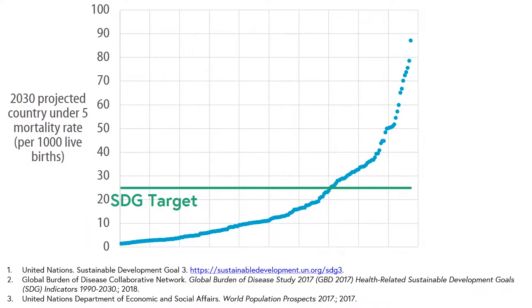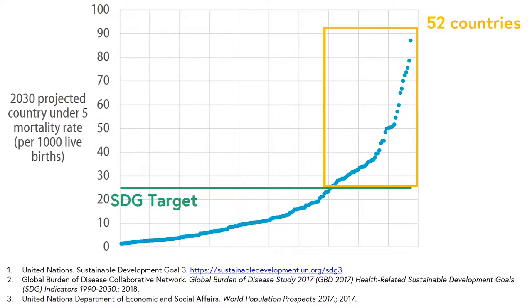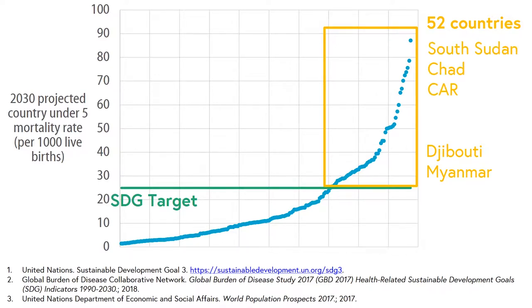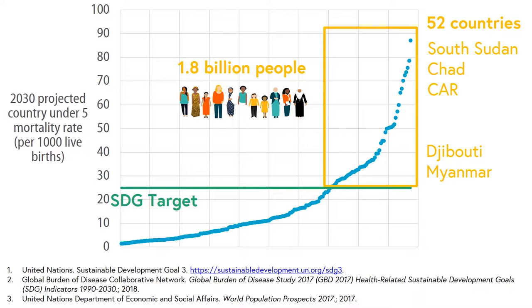Looking to the future, this graph shows the projected under-5 mortality rate for 2030, with each blue dot representing a different country. There are many countries with projected under-5 mortality rates over 25. With current progress, some will come close — for example, Djibouti and Myanmar will get to within one or two of the goal. However, some countries will still be a long way behind, with South Sudan, Chad and the Central African Republic projected to still have an under-5 mortality rate above 75 — three times the target rate. These countries are projected in 2030 to be home to 1.8 billion people.